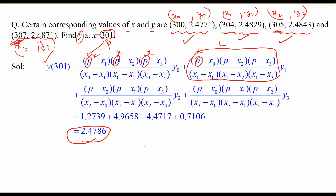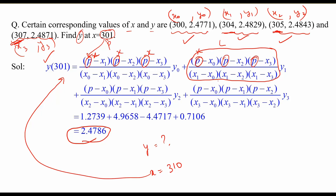Now if you want the value of y at x = 310, you can generally find the polynomial by replacing p with x everywhere in the expression. Replacing all p with x gives you a degree-3 polynomial. Then you simply substitute x = 310 into that polynomial to get the value of y at 310.